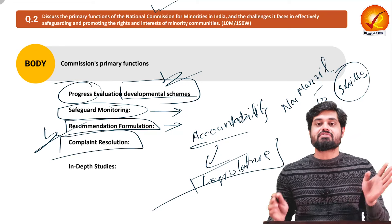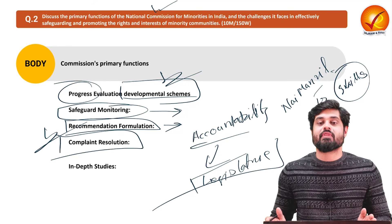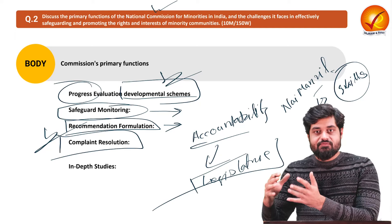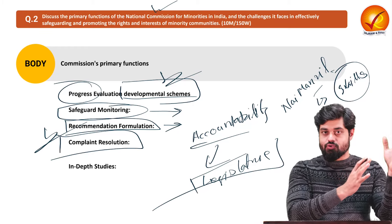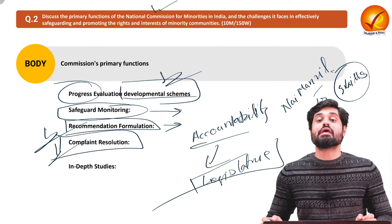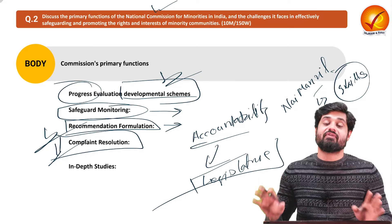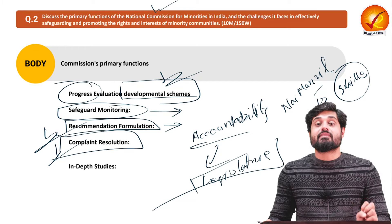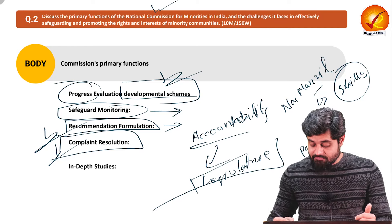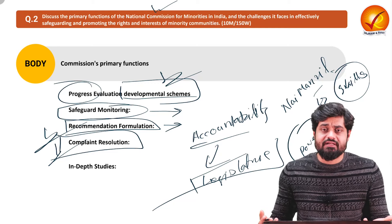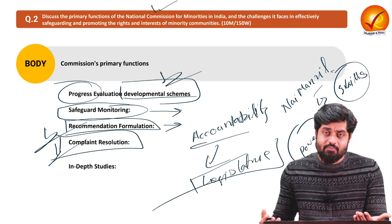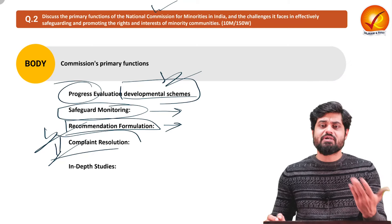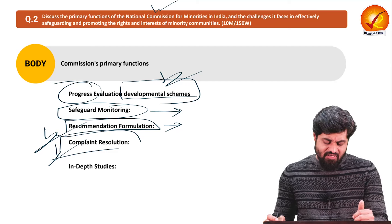Complaint resolution involves two levels — first the minority commissions at the respective state level, then the central level. Complaints must first go to the state level minority commission; if unresolved, they escalate to the central level. This is a problem because if state level commissions are not functioning effectively, it needlessly overburdens the national level. Additionally, the commission has inadequate power — it mostly functions in a recommendatory role and cannot enforce its decisions, which limits speedy redressal of complaints.